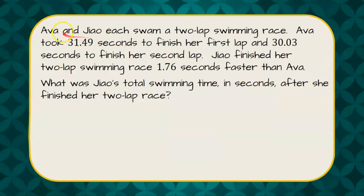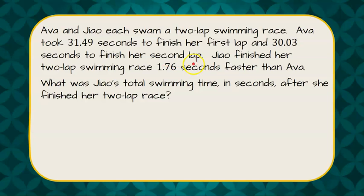So Ava and Zhao each swam a two-lap swimming race. Ava took 31.49 seconds to finish her first lap and 30.03 seconds to finish her second lap.